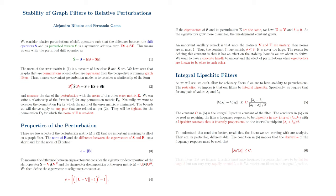To understand this condition better, recall that the filters we are working with are analytic. They are therefore, in particular, differentiable. In this case, the condition in equation 5 implies that the derivative of the frequency response must be such that the product between lambda and the derivative of the filter's frequency response, H prime of lambda, be bounded by C in absolute value.